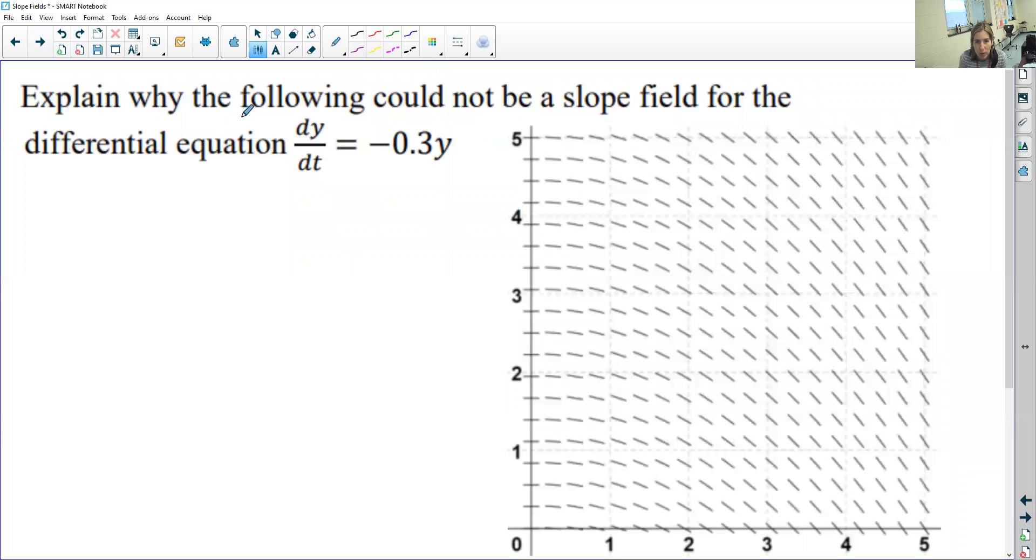Alright, and then I think there's just one more. Okay, so let's explain why this could not be the slope field for this differential equation. So this differential equation is only in terms of y, so shouldn't it be parallel horizontally? But do you see how horizontally these lines aren't parallel to each other. So this couldn't be possible.